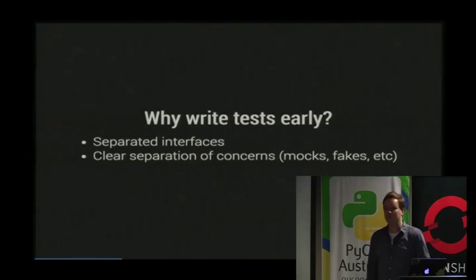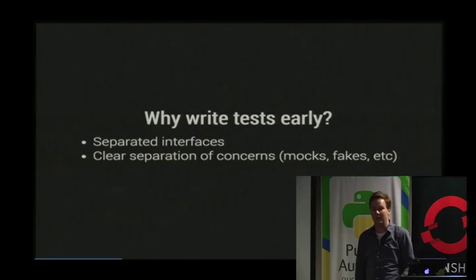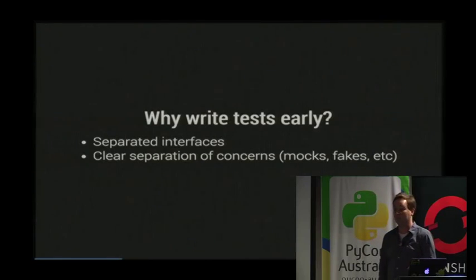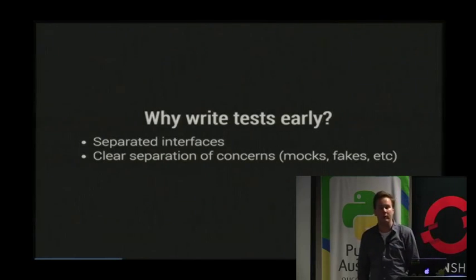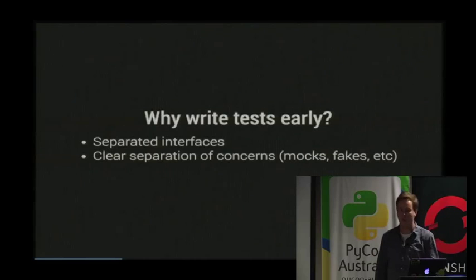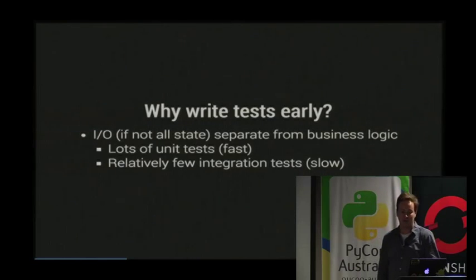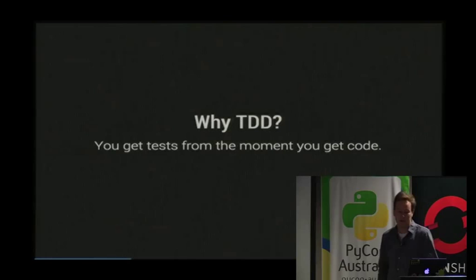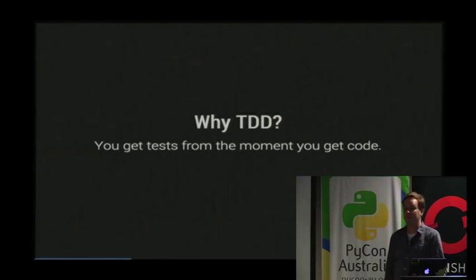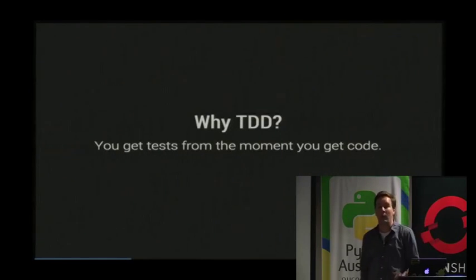There are good reasons to write tests early because you generally have well-thought-out interfaces that are easier to test. You get interfaces that deal with specific concerns, and the concerns are separated so you can mock or write fakes for parts you don't want to test. Considering tests early also generally means that you put IO away from your business logic, because state tends to lead to isolation issues and IO makes tests slow.